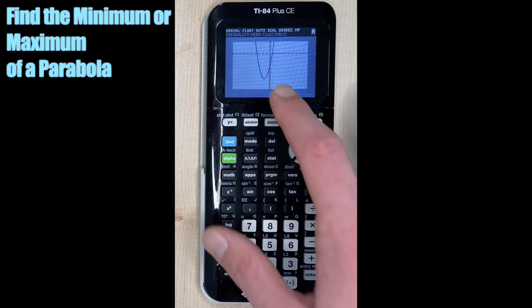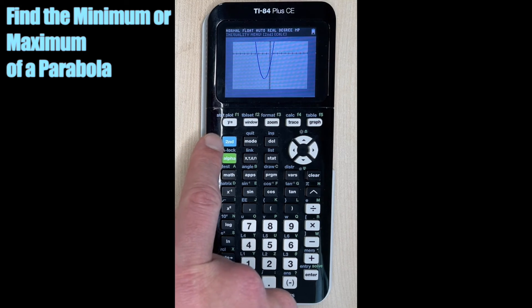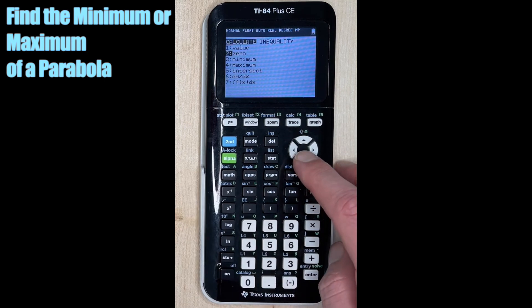All right, that's great. So now we can see we have our vertex at the bottom. So this is going to be the minimum. We're going to do those same steps we did for maximum, but we're just going to choose minimum. So second trace, and we want number three this time. We can go down to number three and hit enter, or we can just hit the number three.